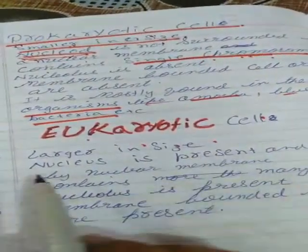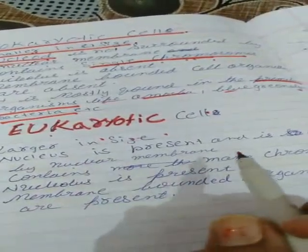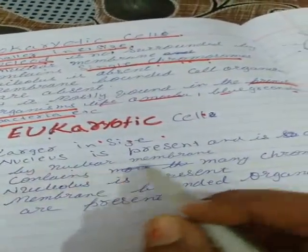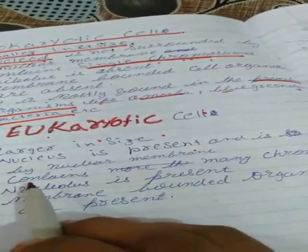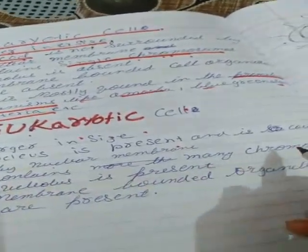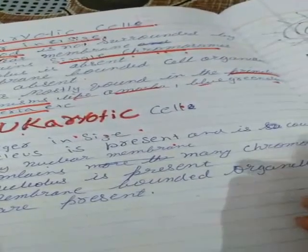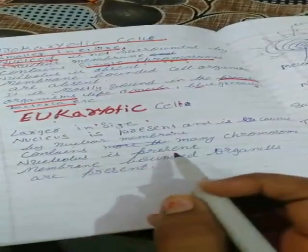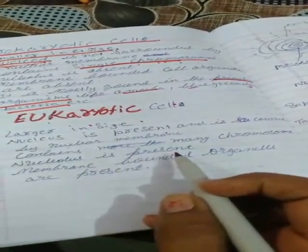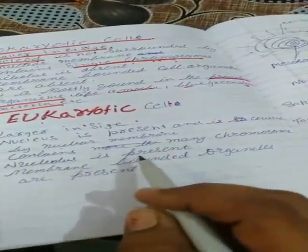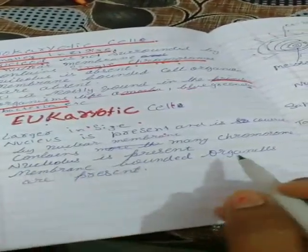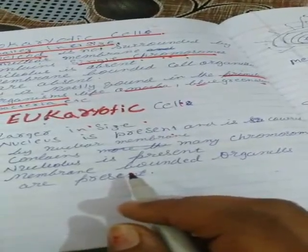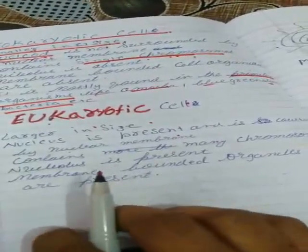Eukaryotic cells are large in size; the nucleus is present and is bounded by nuclear membrane. It contains many chromosomes. The nucleolus is also present inside the nucleus. Membrane-bounded organelles are present, and all organelles have specific shapes.